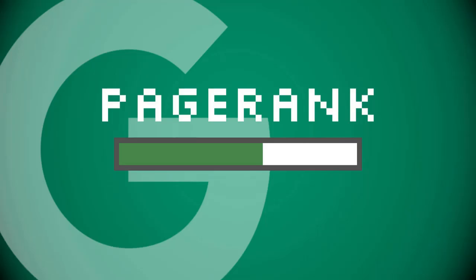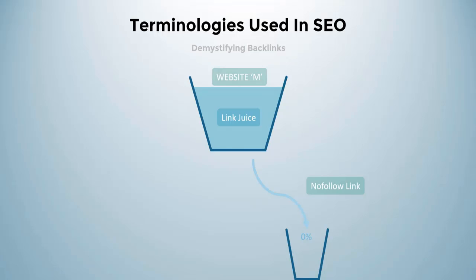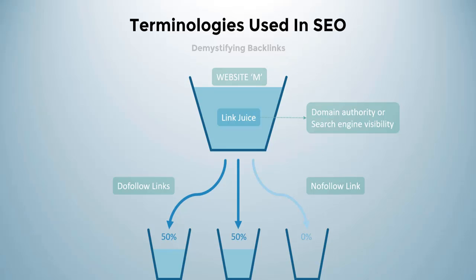Earlier, Google released a few extensions or plugins to see the page rank of every domain and its interior pages. But from March 2016, Google removed the visibility of page rank to the public. Page rank, link juice, domain authority, and search engine visibility of a domain name or web page are all one and the same. Based on page rank, Google used to decide the authenticity of the content in your website. Page rank mainly depends on the number of dofollow links your domain has from authentic websites, so domain authority neither directly depends on nofollow links nor dofollow links from low quality websites.